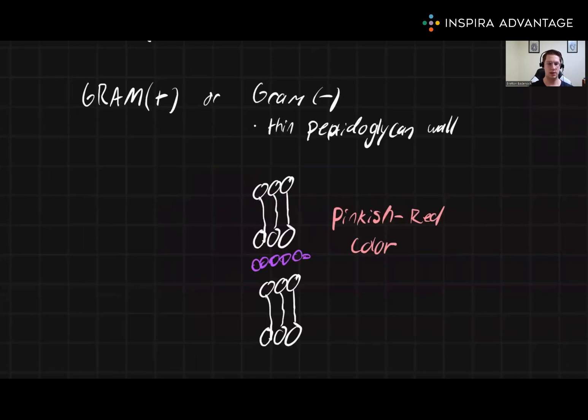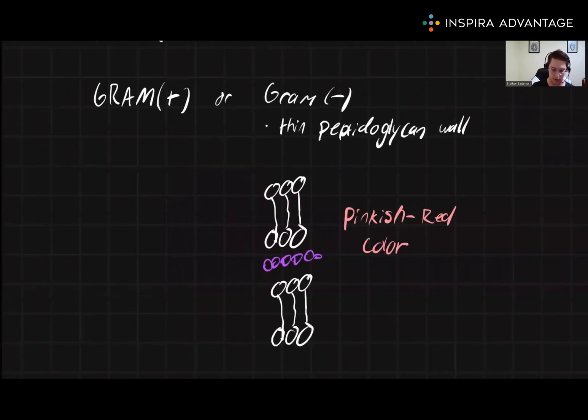Now, let's take a look at how gram positive would look. Gram positive are going to have a thick peptidoglycan wall and have no second cell membrane.